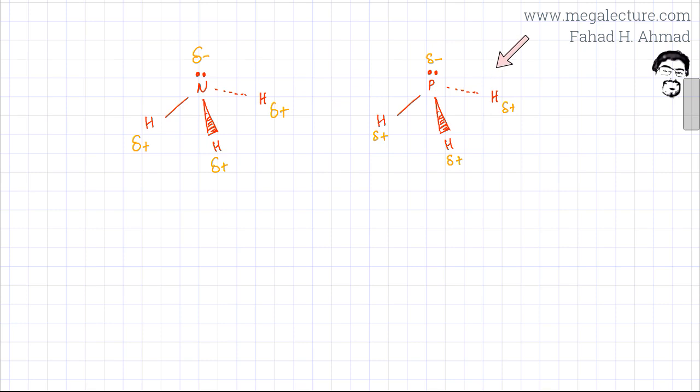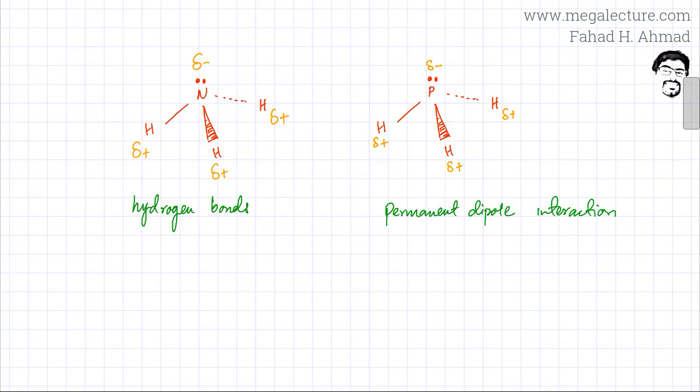PH3 has weaker dipoles. The attractive forces generated by NH3 are stronger; these intermolecular forces are called hydrogen bonds because the partial negative charge from the lone pairs is greater and the partial positive charge is also stronger compared to PH3.